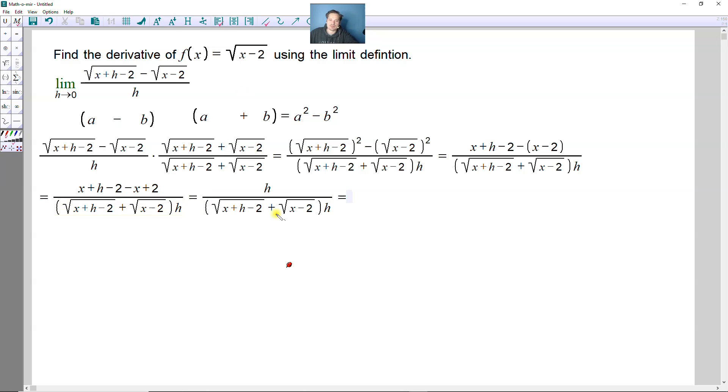Continuing here. Now, you see that the h's will cancel. This h will cancel with this h. So that means next step in the fraction, you're going to have the following. There's a 1 left over in the top and you copy the bottom without the h. So copy it and then you just get rid of the h in this position.